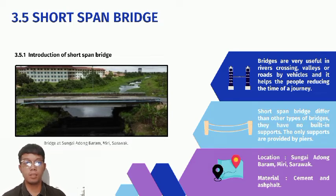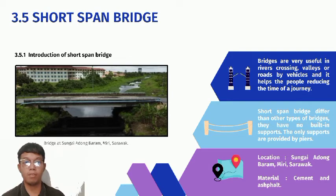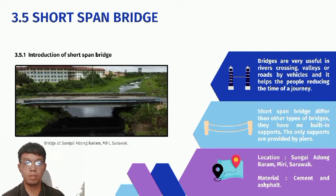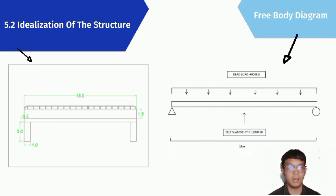The next structure is the short span bridge. Short span bridges are commonly found in pedestrian areas, helping to connect two short distances accessible by land transportation. They differ from other bridge types as they have no building support — the only supports are provided by piers. The chosen bridge is located at Sungai Adong, Baram, Miri, Sarawak. Materials used are cement, with asphalt covering the top. The bridge is 18 meters long, supported by two piers of 3 meters height, 5 meters wide, with a slab thickness of 0.5 meters above the piers.